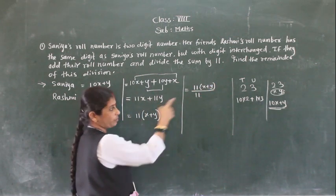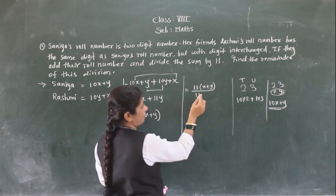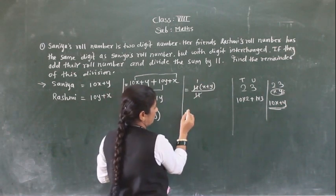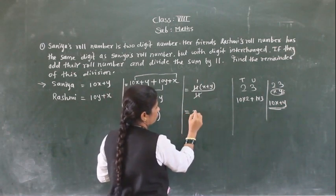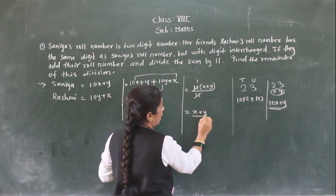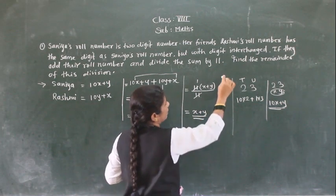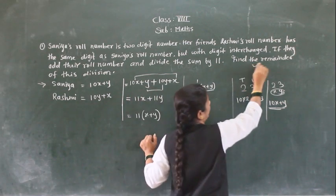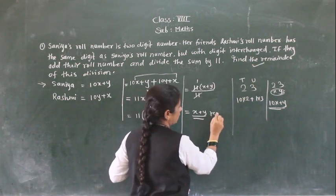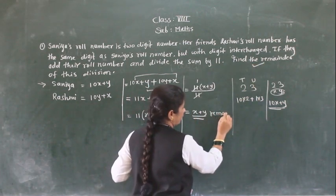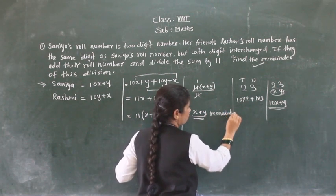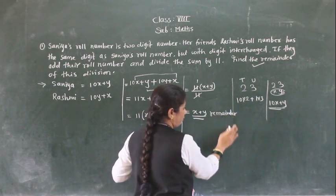And if the sum is divided by 11, we have to divide this sum by 11. So we get 11(x plus y) upon 11, which gives x plus y. The sum is divided by 11. So x plus y is your remainder.